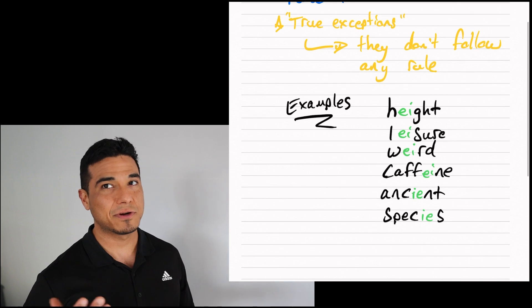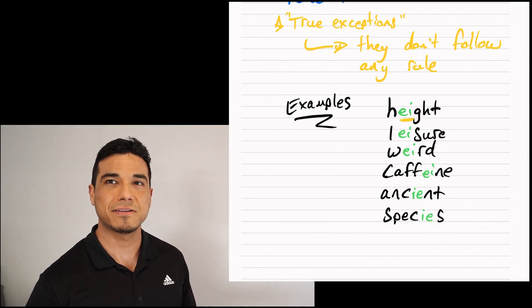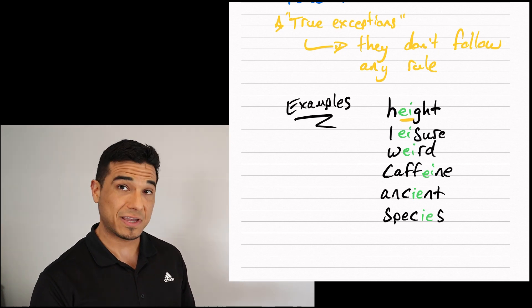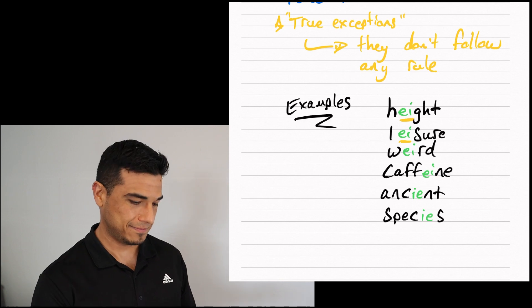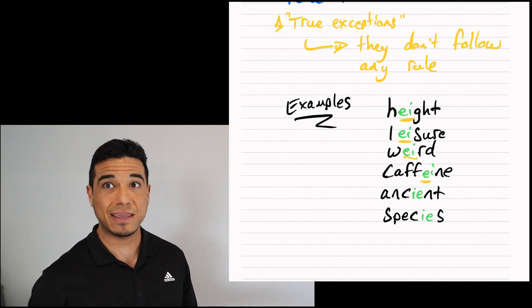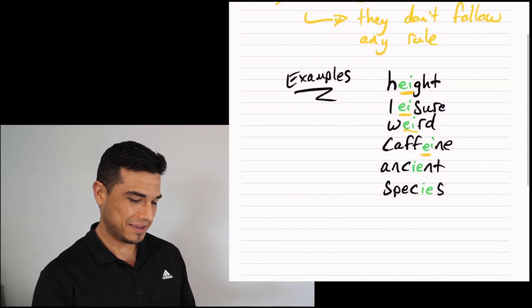You should see the word height. So again, I've got the EI orientation instead of the IE. I've got leisure, I've got weird, caffeine, which your parents know pretty well, and then ancient.